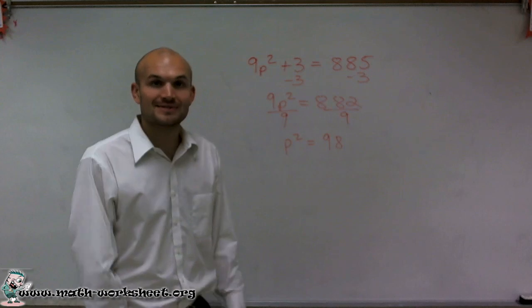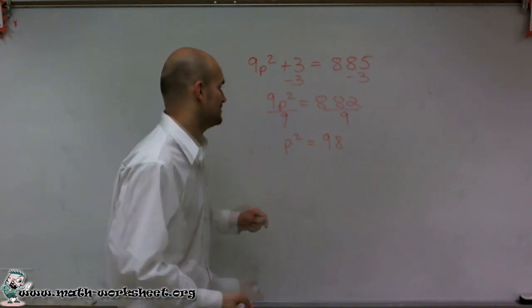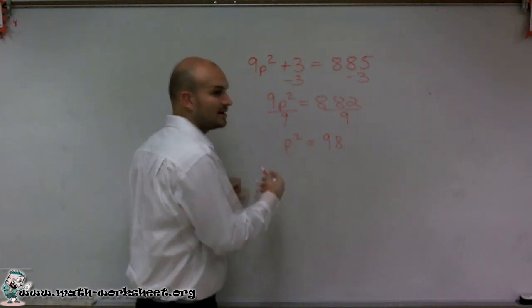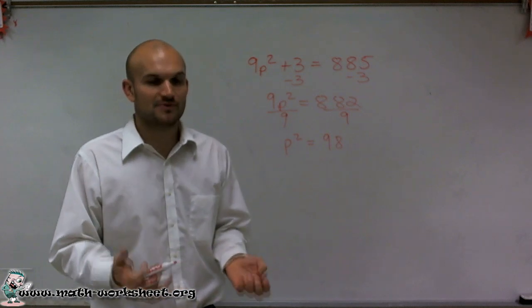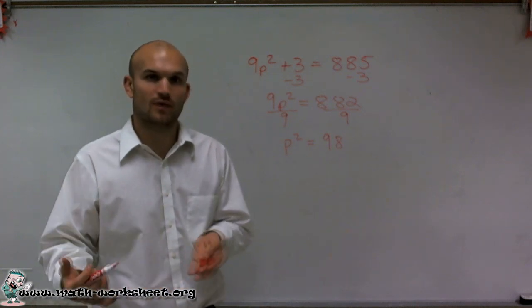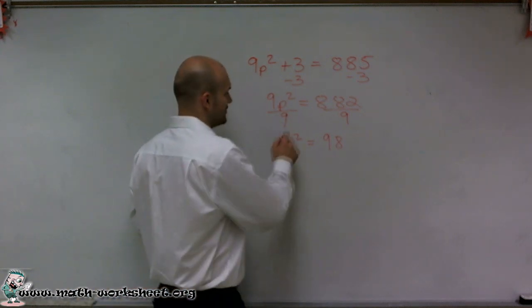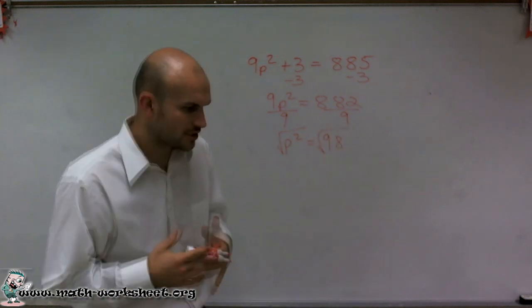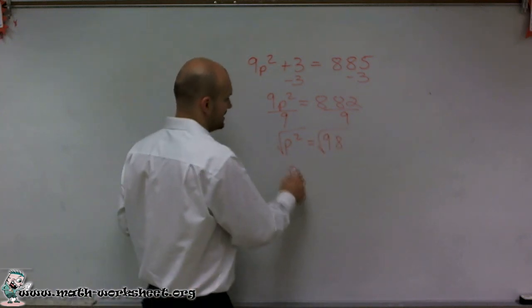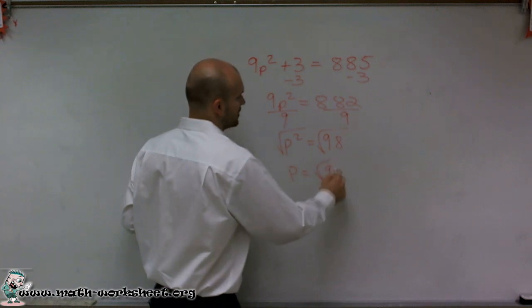So now I have p squared equals 98. Now to find the value of this, I need to undo my squaring. p squared means p multiplied by itself twice. So what I do now is I need to take the square root. So I'm going to say p equals the square root of 98.